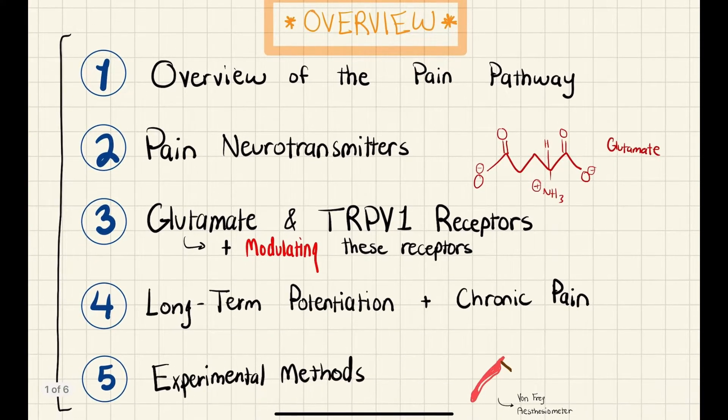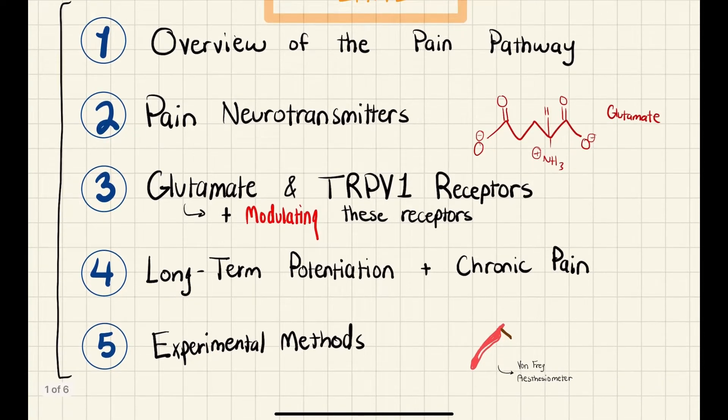So first, we'll go over the overview of the pain pathway from a stimuli into a perception in the brain. Then we'll be going over two key pain neurotransmitters and their balance, which is glutamate and GABA.